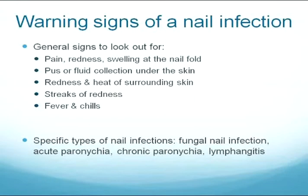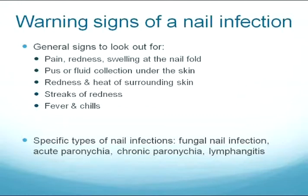Before we talk about four specific types of nail infection, I just want to discuss general signs of an infection to look out for — things you want to have on your radar if you're worried about whether you should seek the help of a healthcare provider. For a nail infection, right at the skin near the nail fold, if you have pain, redness, or swelling, those are concerning features. In the case of pachyonychia congenita, there may be a baseline of chronic pain, redness, or swelling in that area, so the best advice is: if there's an exacerbation or worsening of the pain, redness, or swelling, that's concerning. Other more severe features include pus or a fluid collection under the skin, redness or heat in the surrounding soft tissue and skin, streaks of redness traveling down the fingers or hand or arm, and finally systemic signs of infection — things like fevers, chills, or night sweats.